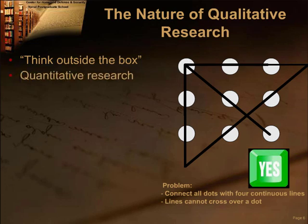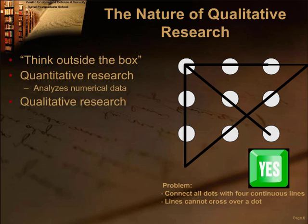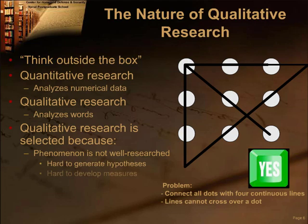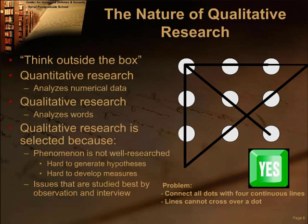Quantitative research is used to analyze numerical data. Qualitative research analyzes words. Researchers may choose a qualitative approach for several reasons: because the phenomenon under study is not well researched, which means it might be hard to generate hypotheses and develop quantitative measures; because the issue at hand can be studied more deeply by observing actual behavior or questioning informants; and because a process can be studied over time.